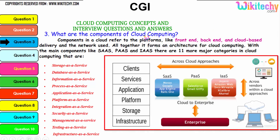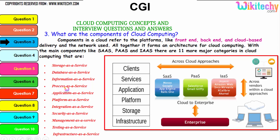Now let's talk about the components of cloud computing. Components in a cloud refer to platforms like Software as a Service, Platform as a Service, and Infrastructure as a Service. There are 11 major categories in cloud: storage as a service, database as a service, information as a service, process as a service, application platform, integration, security, management, testing, and finally infrastructure. These are additional services associated with the three major services to form cloud computing.